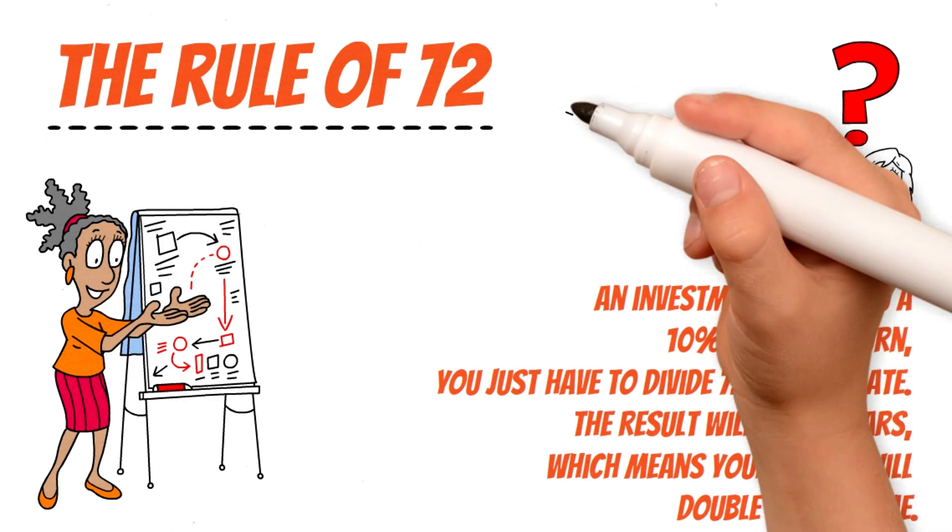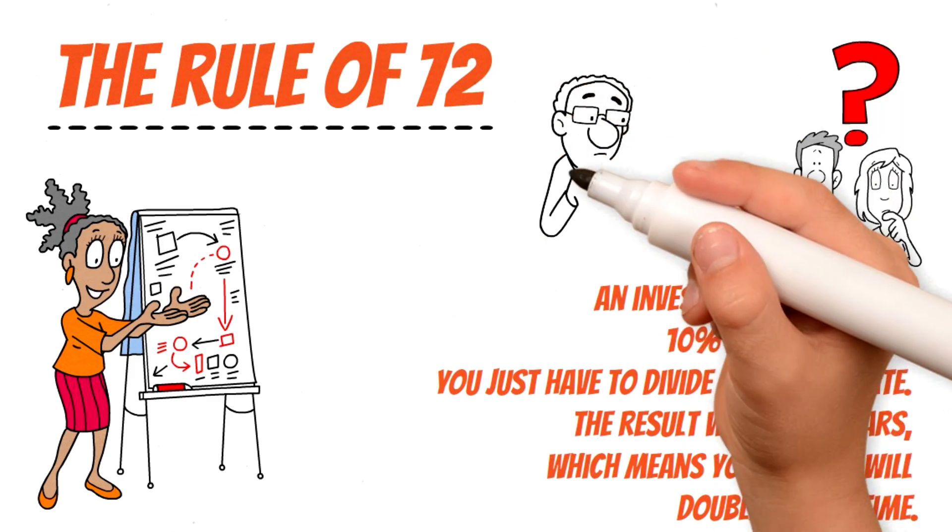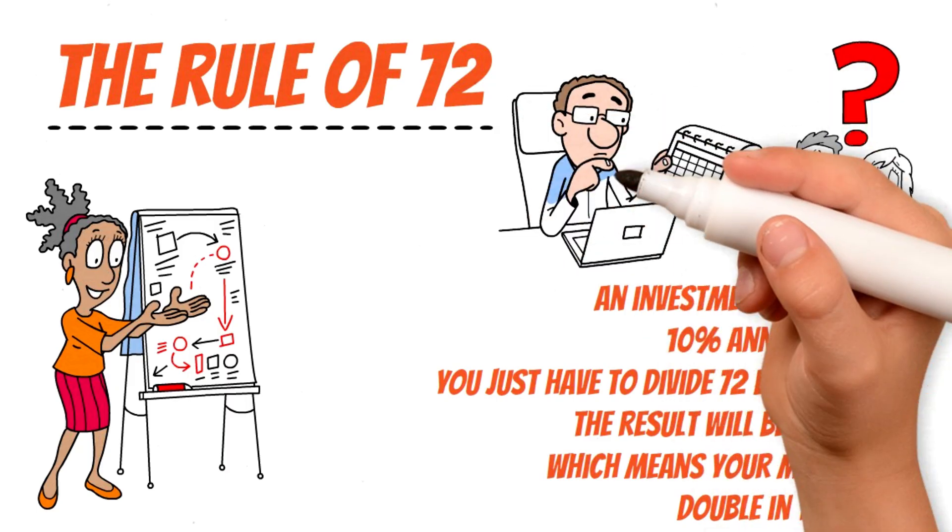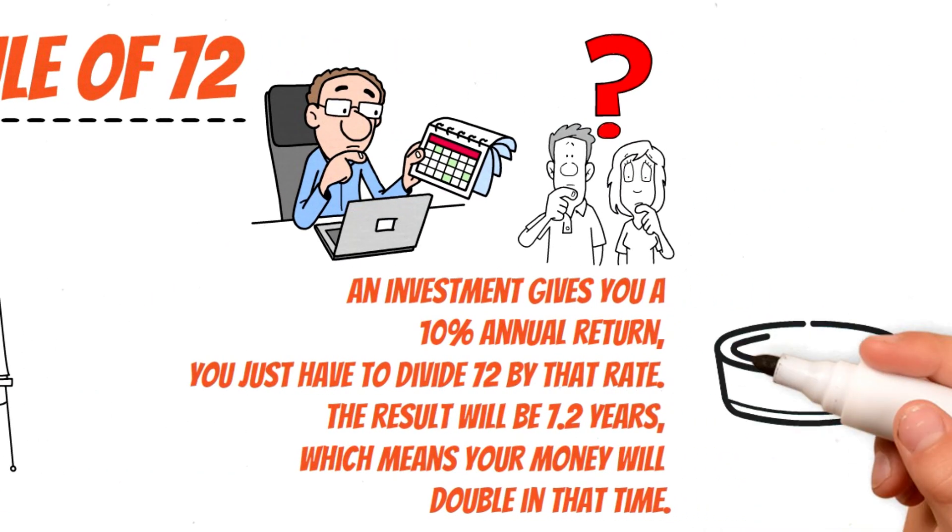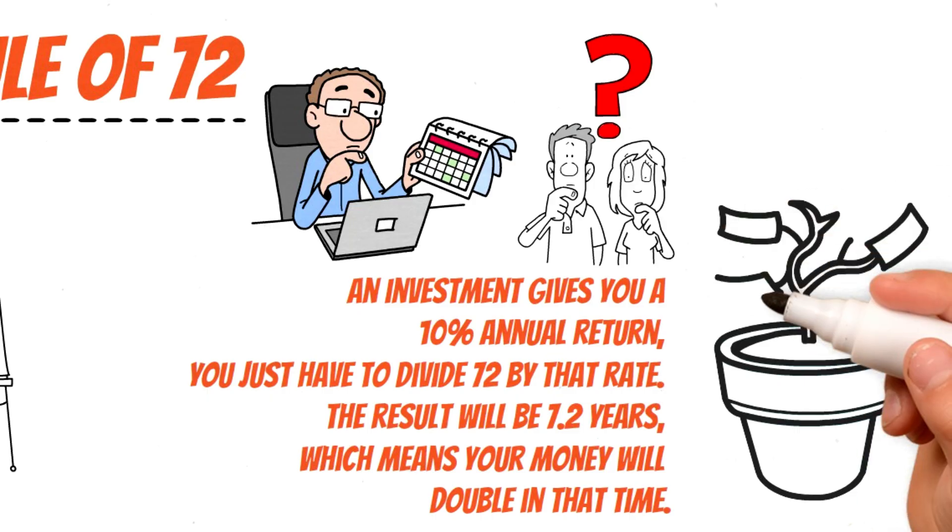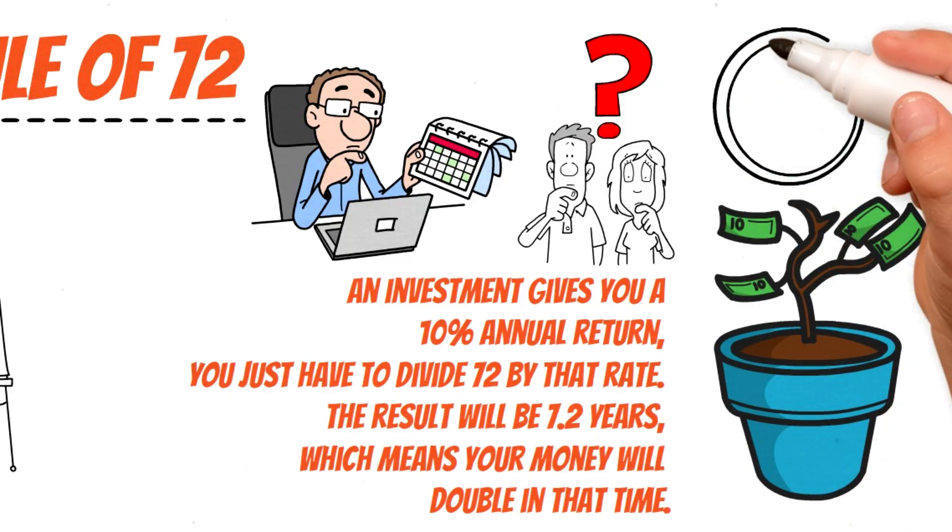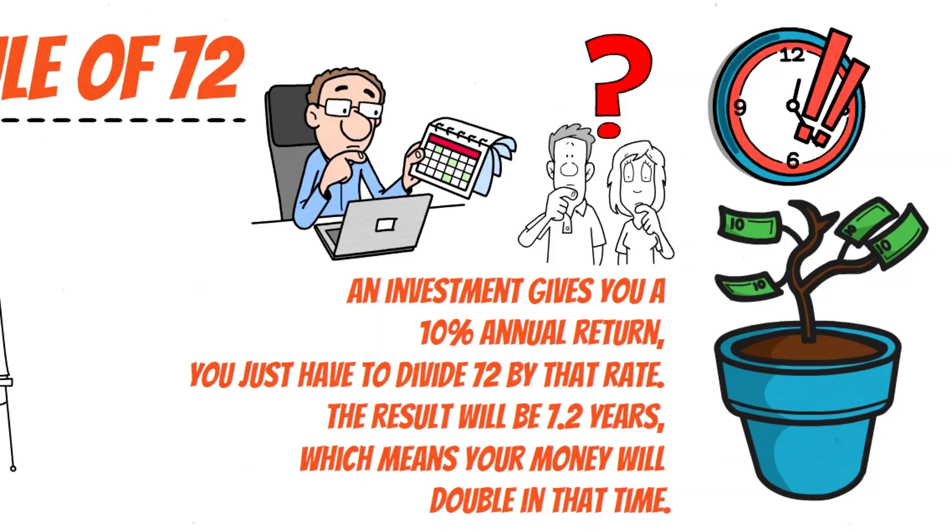But the most impressive thing about this rule is not just how easy it is to apply, but how it changes our view of time and money. Because as Einstein said, compound interest is the eighth wonder of the world. It is magical. What is truly magical is how time acts as the silent ally that turns small actions into big results.